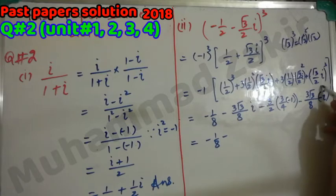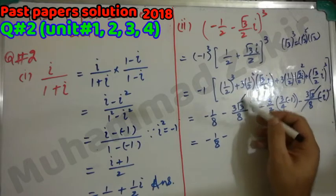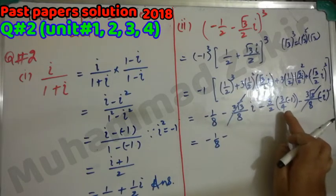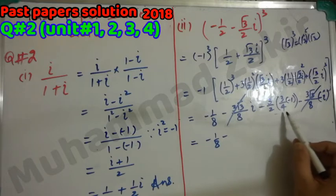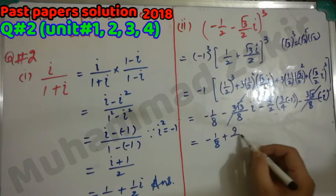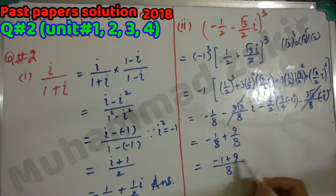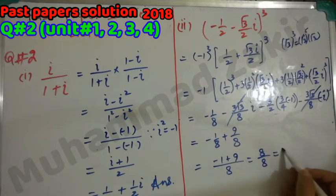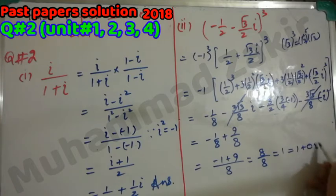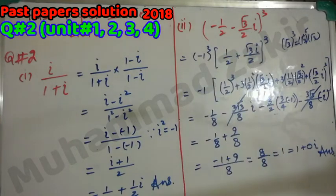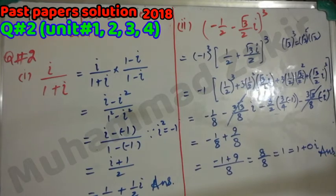After cancellation, we have minus 1/8 and the remaining terms make 9/8 plus 9/8. Taking LCM of 8: minus 1 plus 9 equals 8, giving 8/8 which equals 1. The answer is 1 + 0·i, so the cube of this complex number is a real number.